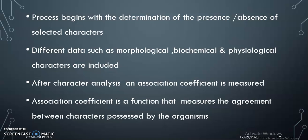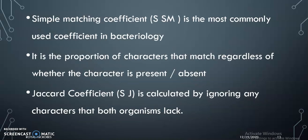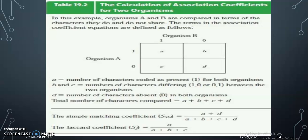After character analysis, an association coefficient is measured. An association coefficient is a function that measures the degree of agreement between the characters possessed by organisms. The simple matching coefficient and Jaccard coefficient are the two coefficients used. The simple matching coefficient is the most commonly used in bacteriology. It is the proportion of characters that match, regardless of whether the character is present or absent. The Jaccard coefficient is calculated by ignoring any characters that are absent in both organisms.